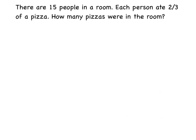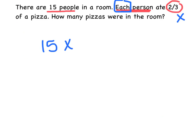Let's try our next problem. It says there are 15 people in a room — I'm going to underline that, there are 15 total people. Each person — this is really key — ate two-thirds of a pizza. How many pizzas were in the room? A key word is each, which means you multiply, because every single person is eating two-thirds. You could add that up 15 times if you wanted, but a quicker way is there are 15 people and each of them eats two-thirds of a pizza.